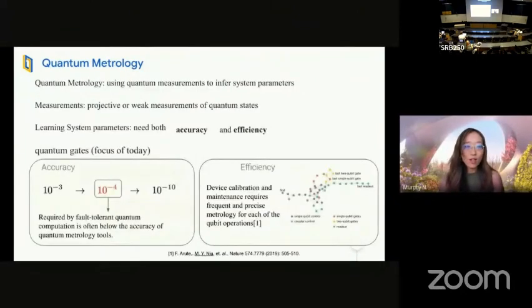There are two very critical goals for quantum metrology. One is we want to be extremely accurate and extremely efficient with regard to the number of measurements, computing resources, and time. Accuracy is crucial since we are at the pivotal moment of crossing the fault tolerance threshold.